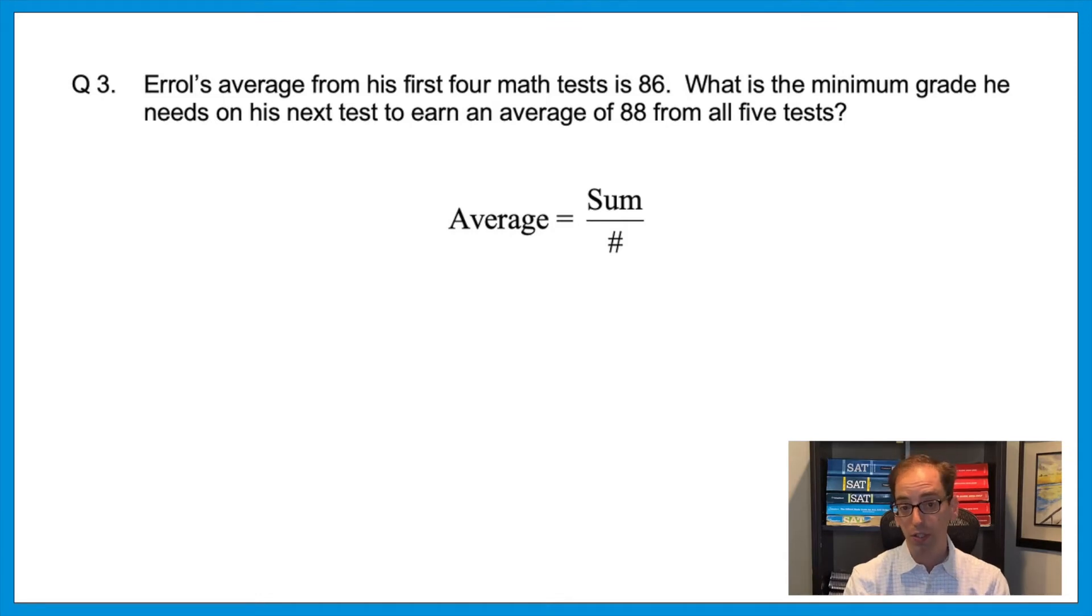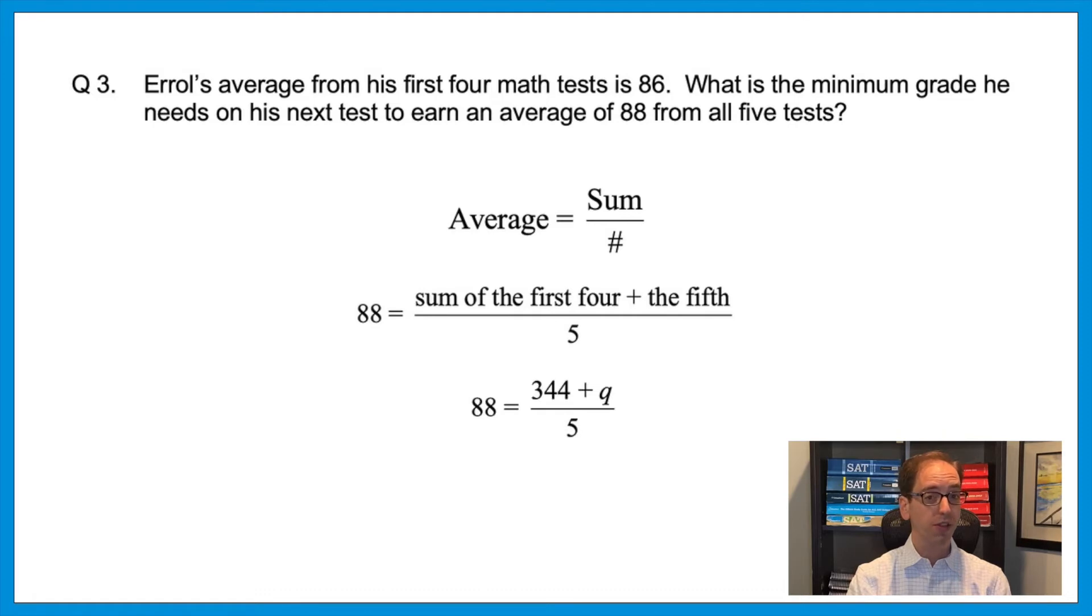So incorporating the second part of the question, we know that five tests are going to have an average of 88. So plugging all of that into the formula, we could say that 88 equals the sum of the first four tests plus the fifth one over five. And now using this information, we know that 344 represents the sum of those first four. So plugging that in would now give 88 equals 344 plus the fifth test. Let's call it Q over five. And now we could just isolate that Q. But look at what they're doing. They don't want us to solve for the answer to a formula. They want us to solve for a piece inside of the formula. And this is what we mean by formula manipulation.